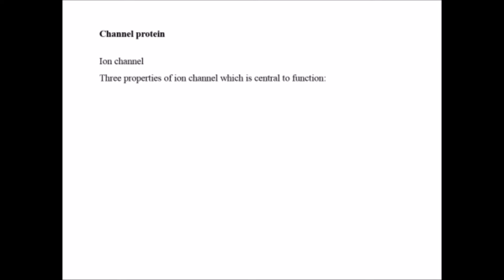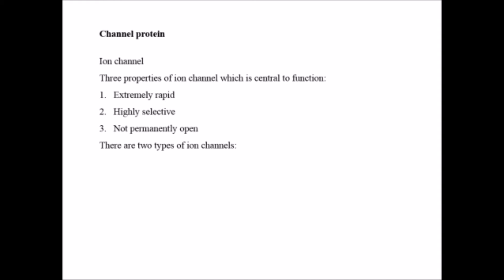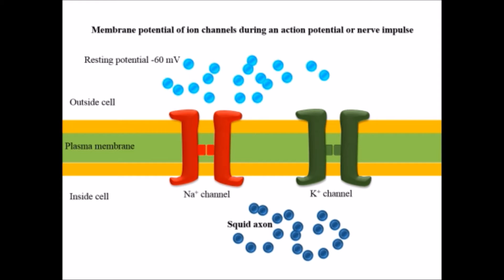Another type of facilitated transportation involves channel proteins. In ion channels there are two types, and they have certain key properties central to their function: they are very rapid in nature, highly selective, and not permanently open. The two types are ligand-gated ion channels and voltage-gated ion channels.